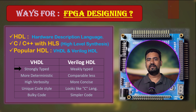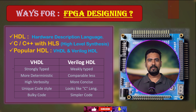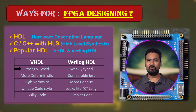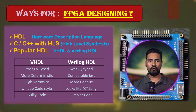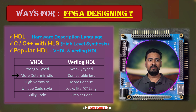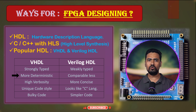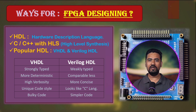VHDL takes a different approach compared to Verilog. VHDL is a strongly typed language, which means the compiler can identify errors early in the development process, and this can save a lot of debugging time later on. VHDL is also more deterministic, meaning its behavior is easier to predict, which makes it more suitable for safety-critical applications such as in the medical and aerospace fields.